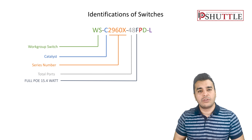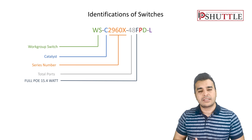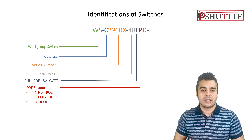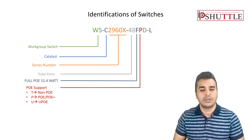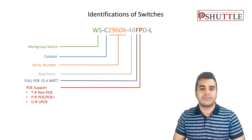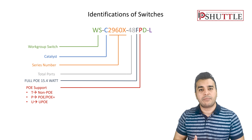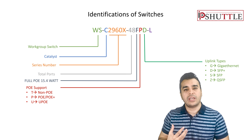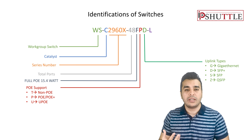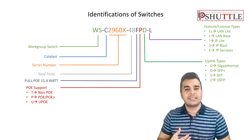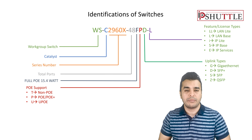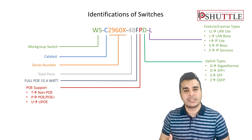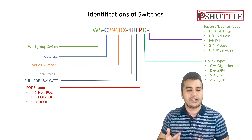The abbreviation F means full PoE — all ports support 15.4 watts. P means PoE-based, and U refers to UPoE. There is no specific power number used for UPoE Plus, but you can identify it based on the power supply wattage available for PoE devices. D refers to the uplink type — D means SFP Plus, which could be Gigabit Ethernet, copper-based, or dual. L refers to licensing: L means LAN base, a layer 2 feature set. LL means LAN Light.